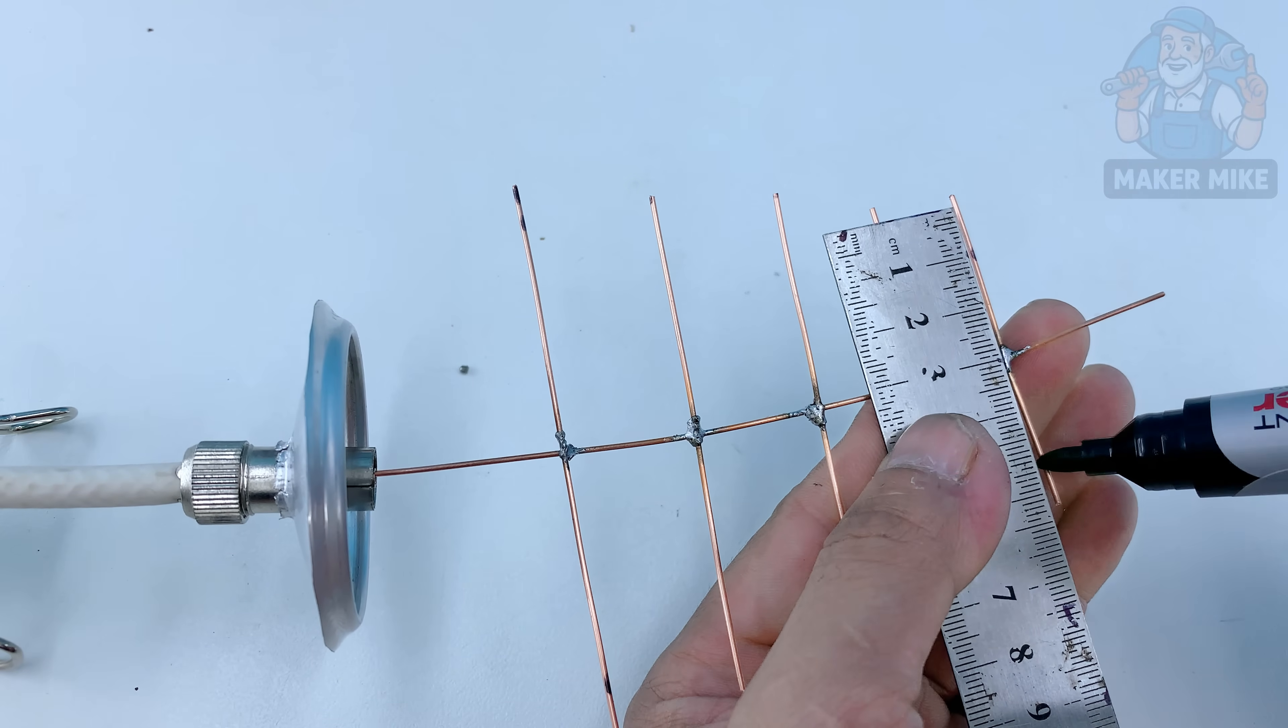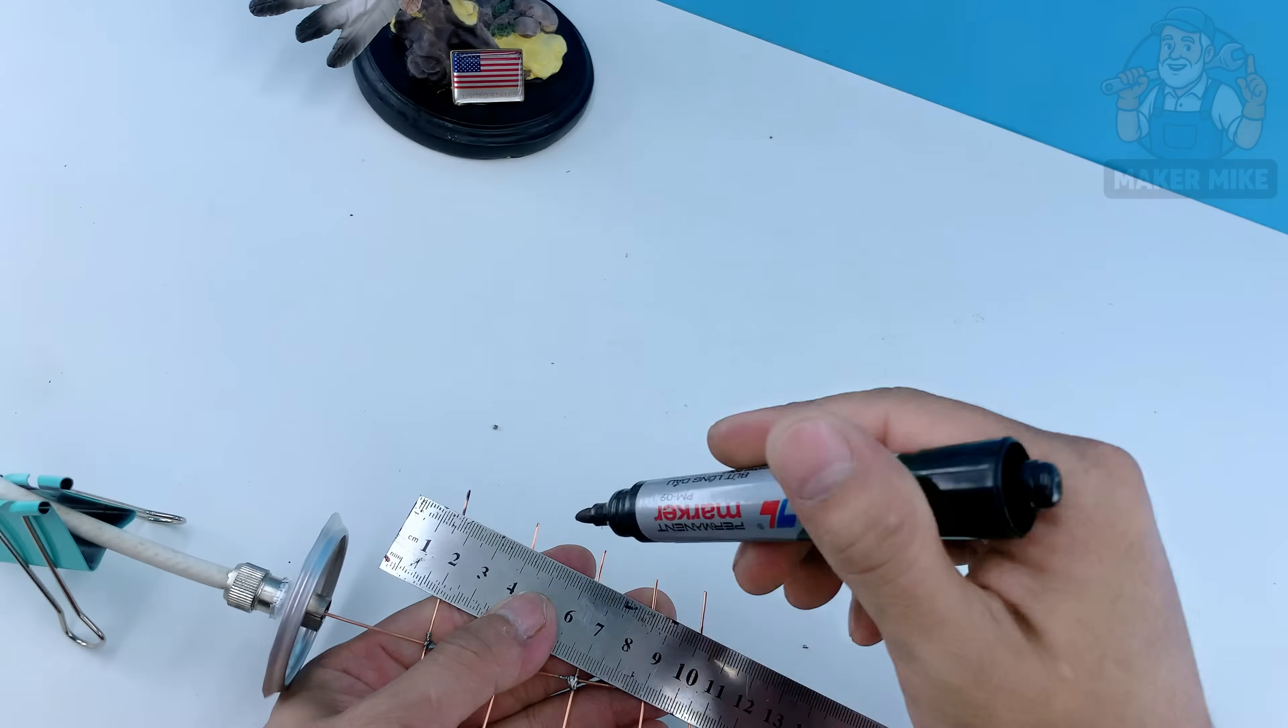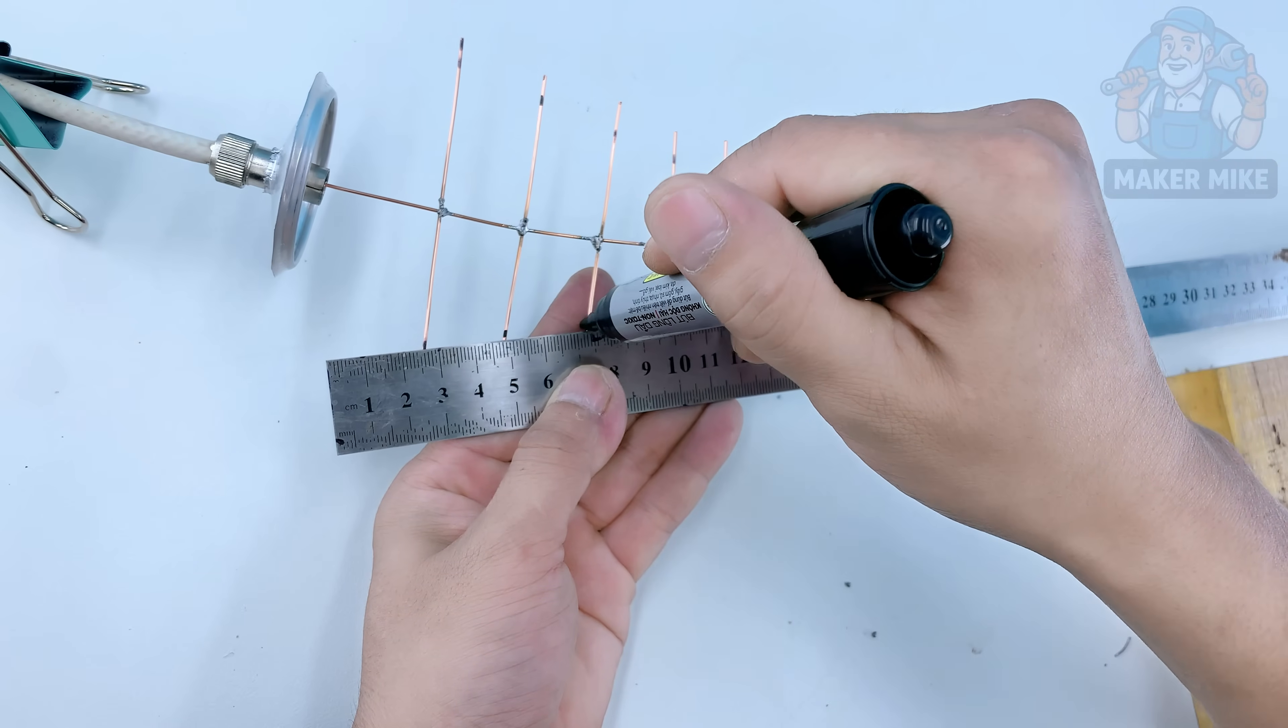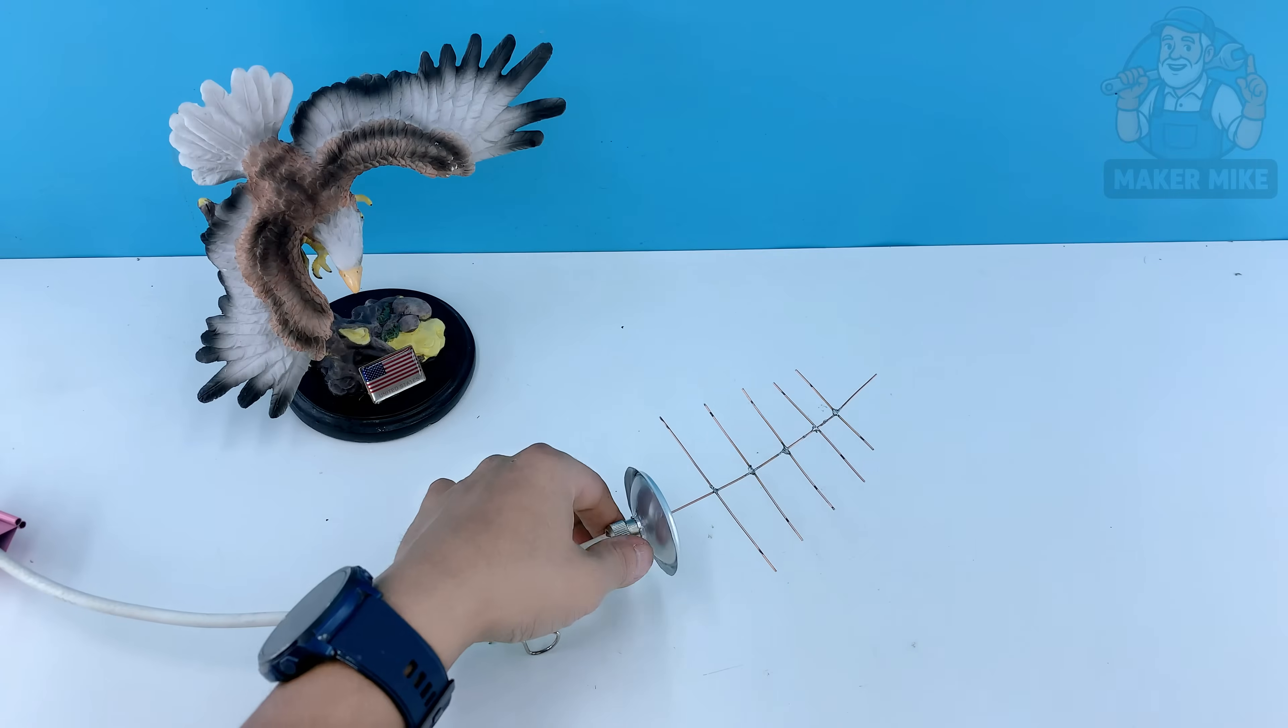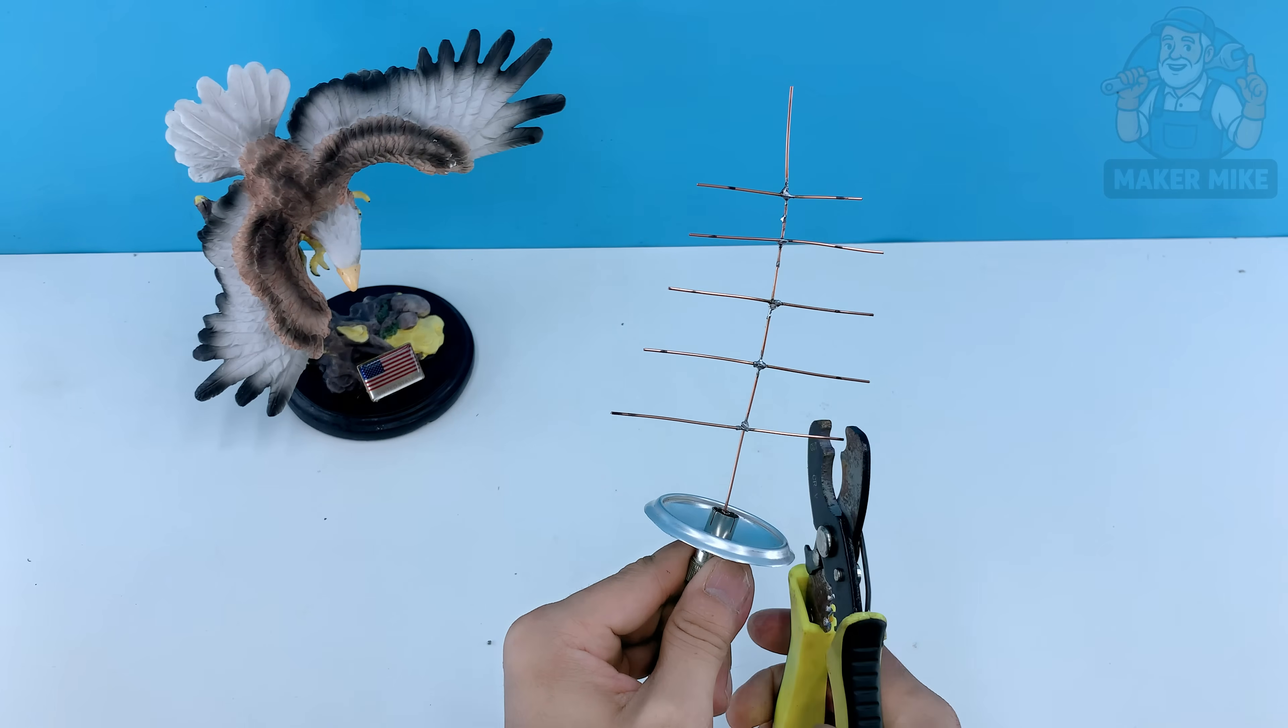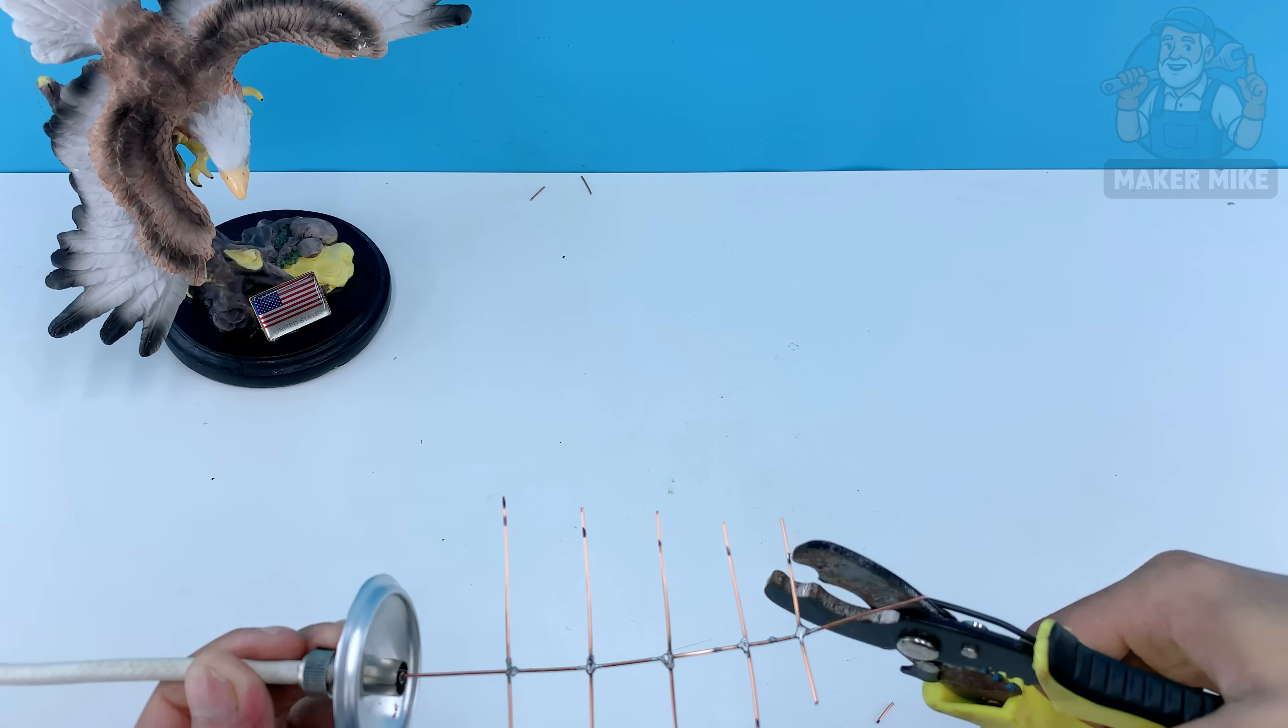When all five pieces are in place, take a moment to check your work. Every joint should look smooth silver and solid. No burnt spots or cold solder. A quick wipe with a cloth or small brush will clean off any residue. What you've got now is the main signal element, five copper arms, each one tuned to catch radio waves and pull them straight into your TV. Simple materials, solid craftsmanship and a bit of patience, that's how you make something that really works.